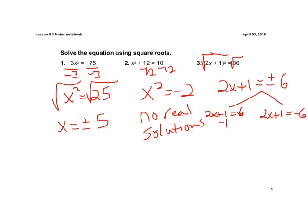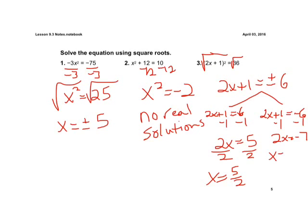Let's subtract 1. So we have 2x equals 5. Divide by 2 here. And we're going to get a fraction, which is okay. One of our solutions is 5 halves. And if we kind of squeeze this in on this side, we're going to subtract 1. So we have 2x equals negative 7. And divide by our 2 there. So we have x equals negative 7 halves. So there are our two solutions.